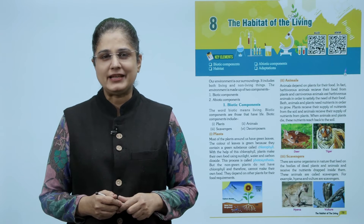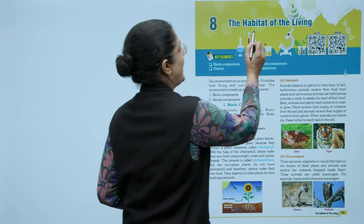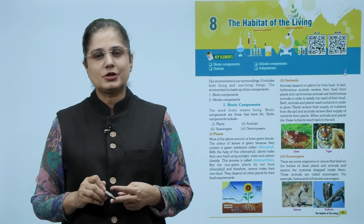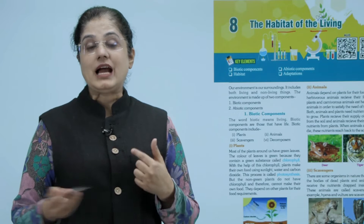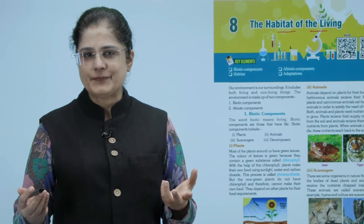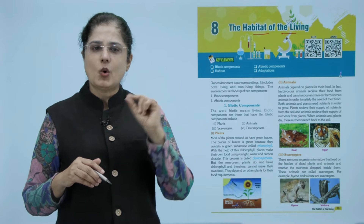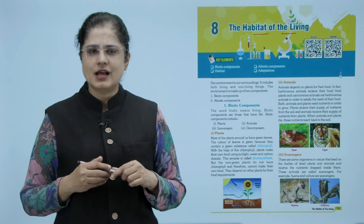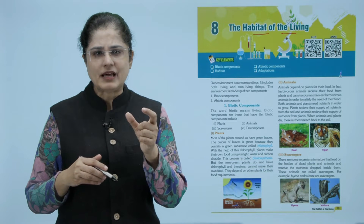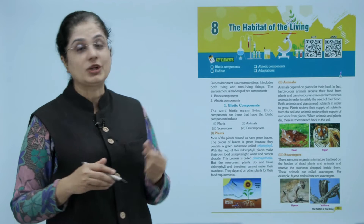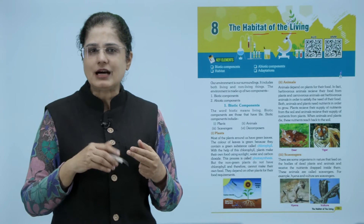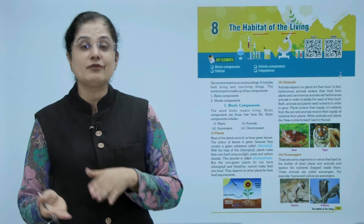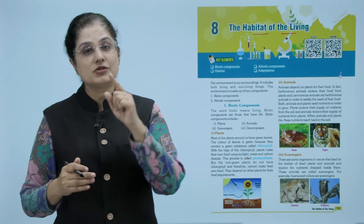Hello children, hope all of us are well. The topic for today is the habitat of the living. The key elements of this chapter are biotic components, abiotic components, habitat, and adaptations. Around us there are many organisms, and some are called biotic components. Others are called abiotic components - these are the places where organisms live. How a living organism adapts itself to survive in a particular place is called adaptation.